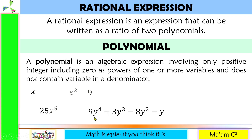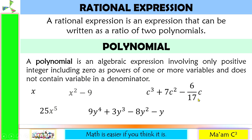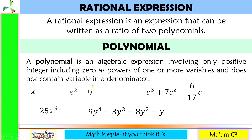A polynomial having 1, 2, 3, 4 terms. Now how about this one? We have here a denominator, but notice that the denominator is only a constant. There is no variable in the denominator, so this is still a polynomial. The condition is: does not contain a variable in a denominator. Since there is no variable here, again this is a polynomial.